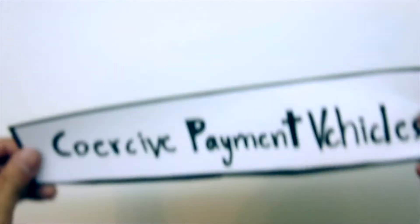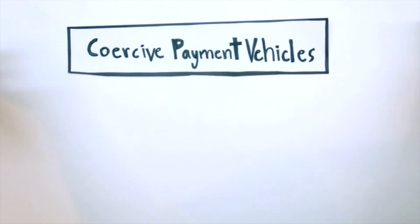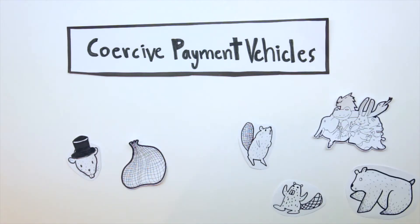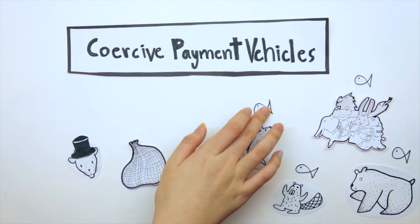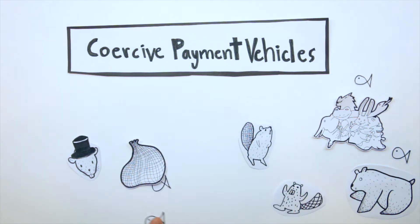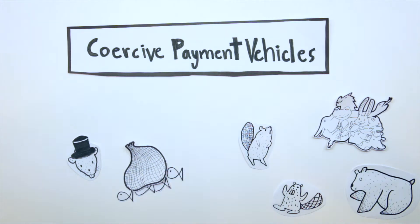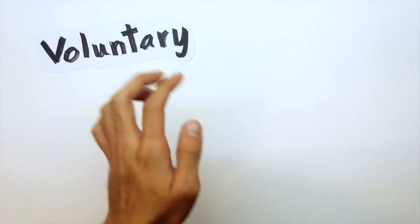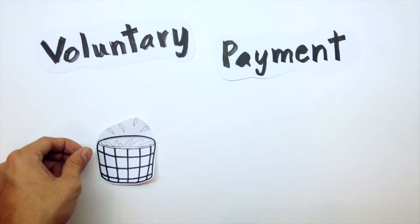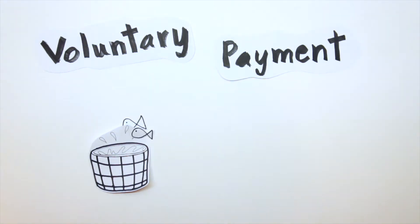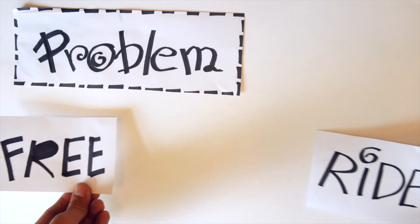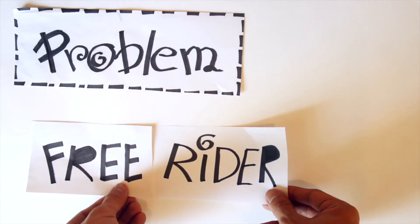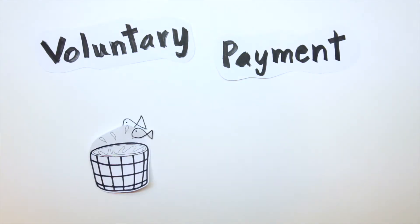We have to choose what payment vehicle to use. Coercive payment vehicles include tax, fees, and charges. As people refuse the idea to pay higher tax, although it is welfare-enhancing. Voluntary payment includes donations and gifts. On the other hand, they might encourage free riding and overestimate WTP.